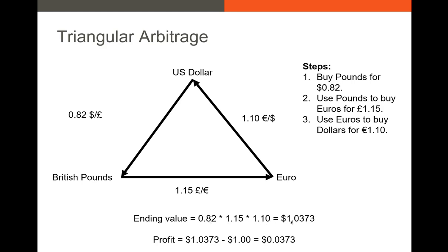Starting with $1 and making those three trades — converting to 0.82 pounds, then to 1.15 euros per pound, then to $1.10 per euro — your ending value is approximately $1.0373, giving you an arbitrage profit of about $0.0373. The goal for a high frequency trader is to make this trade many times. However, as you make these trades, you bid up the price of the pound, making it more expensive over time, and eventually the profit shrinks toward zero. By making this trade frequently, you're actually increasing market efficiency.